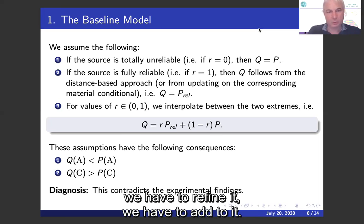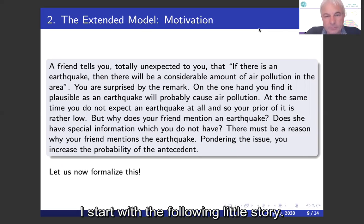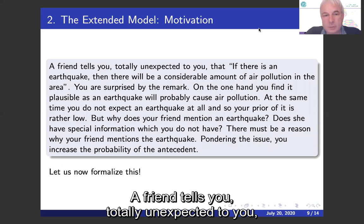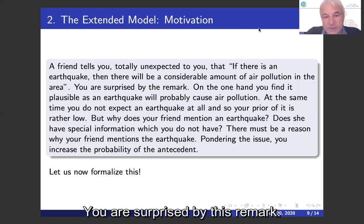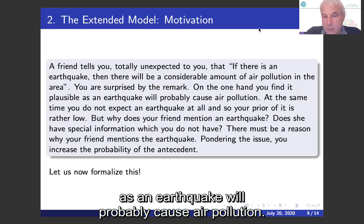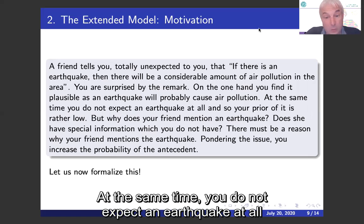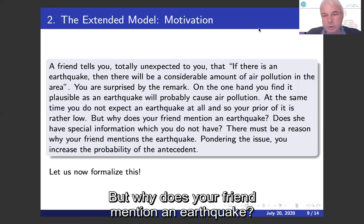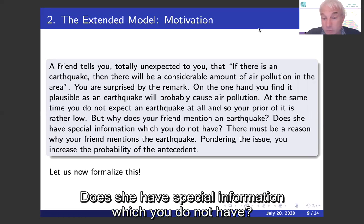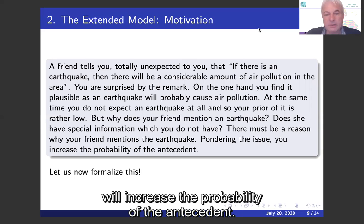To motivate our extension, consider the following story. A friend tells you, totally unexpectedly, that if there is an earthquake, then there will be a considerable amount of air pollution in the area. You are surprised. On the one hand, you find it plausible, as an earthquake will probably cause air pollution. At the same time, you do not expect an earthquake at all and your prior probability of it is rather low. But why does your friend mention an earthquake? Does she have special information you do not have? There must be a reason — and pondering the issue, you increase the probability of the antecedent.